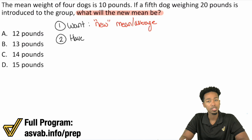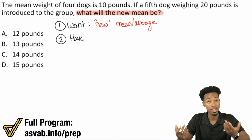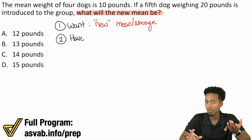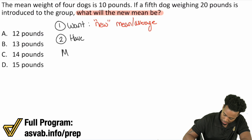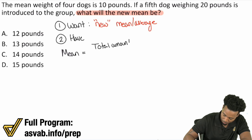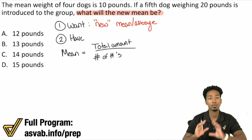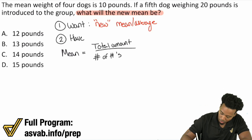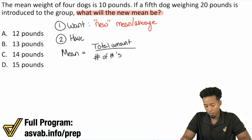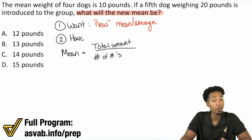Before we continue, it's important to understand the formula for calculating average. If we don't know that formula, this is going to be a lot harder. The formula to calculate mean equals the total amount divided by the number of numbers — the total amount on top and the number of values on the bottom — and that equals your mean. With that said, let's get into it and pick apart the information.